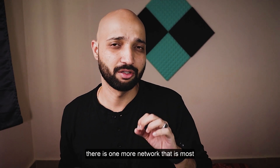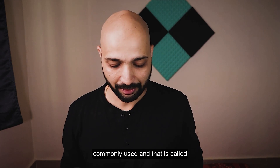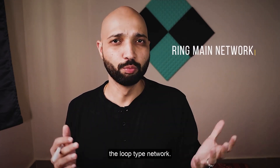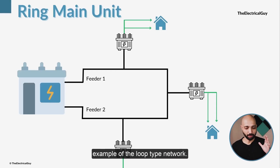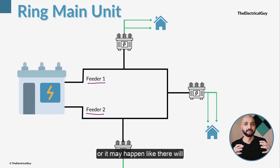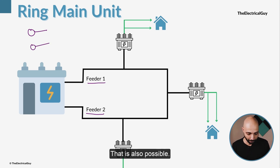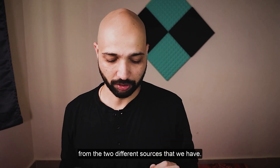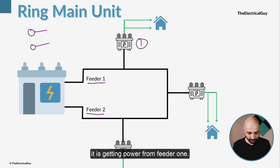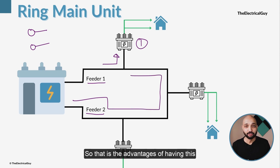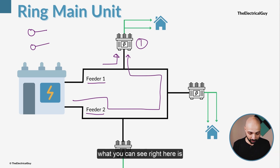To overcome that disadvantage, there is another network called the ring main network, also known as the loop type network. Here, two feeders are taken from the substation — or even from two different substations — creating a loop. Each load receives power from two different sources. For example, if load one is getting power from feeder one and feeder one develops a fault, you can still feed that load via feeder two.